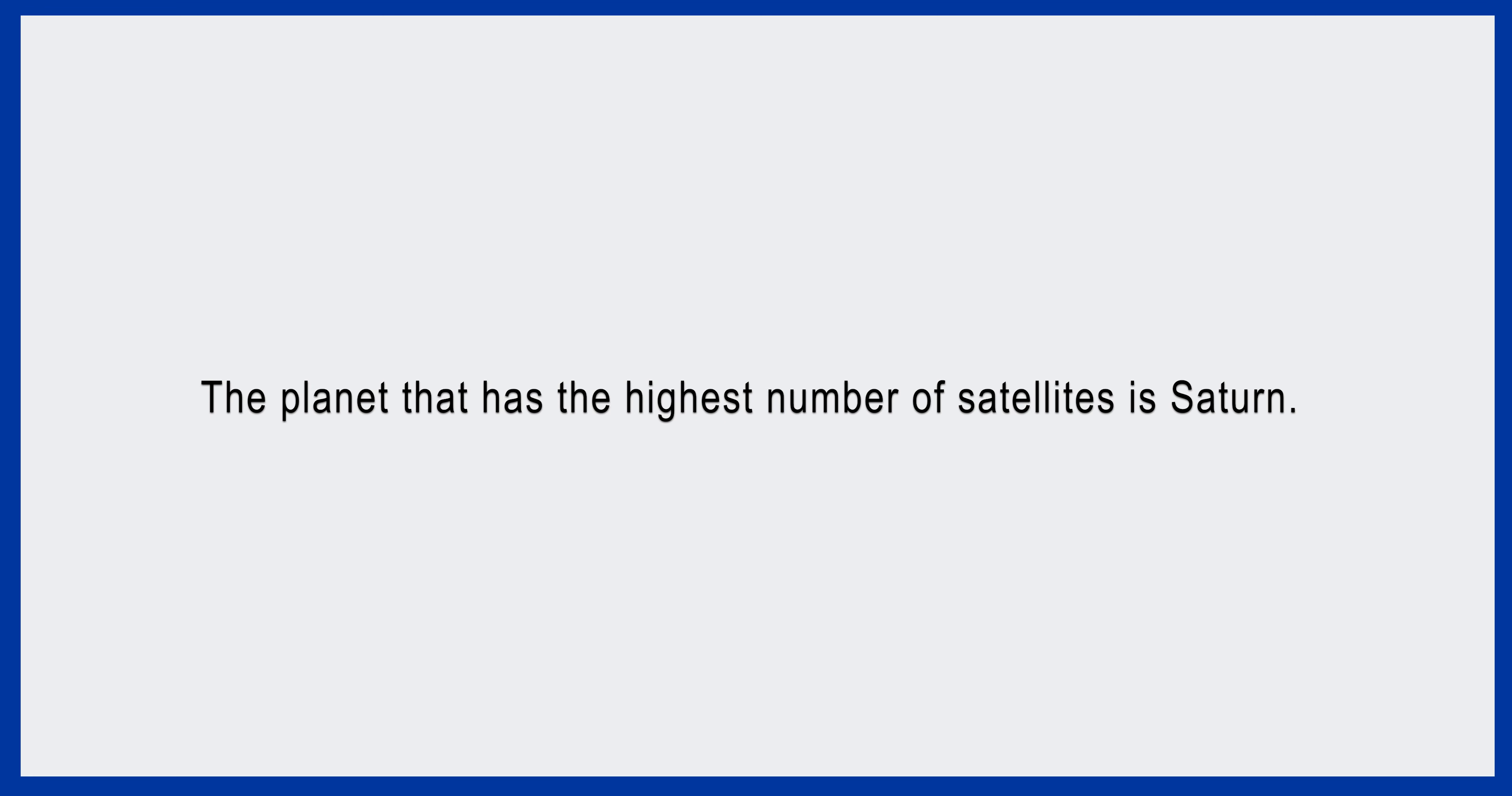Now, see this example. The planet that has the highest number of satellites is Saturn. In this sentence, if I were to say, 'the planet is Saturn,' you would certainly ask, which planet? This shows that the adjective clause is necessary to identify the planet, and therefore, no commas are used around it.